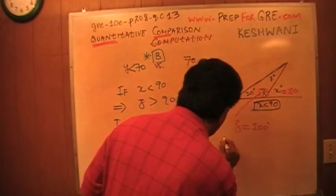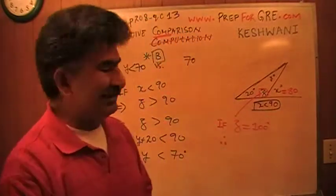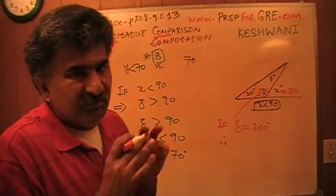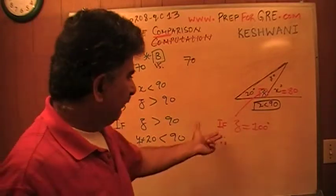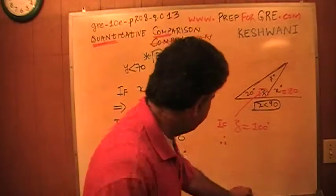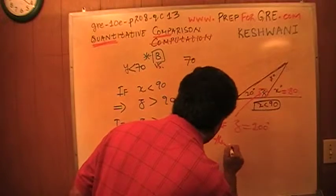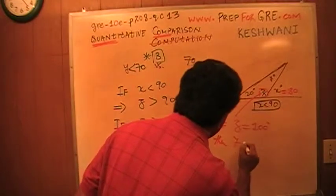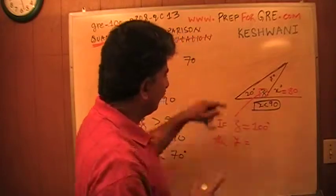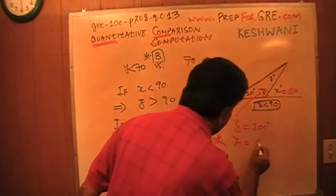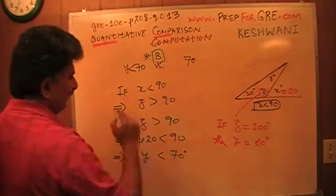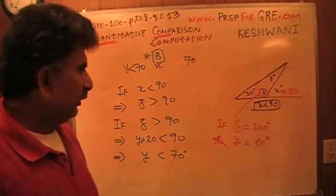I'm just making up a number for z, plugging in. If z equals 100, then y would have to equal, we have 80 left over. This is 20, so y would have to be 60. You see, y is 60 less than 70. This is 70, then the answer is b. And that's all it is.